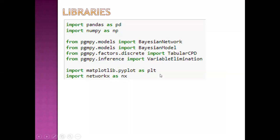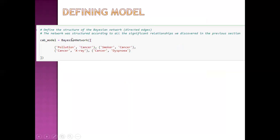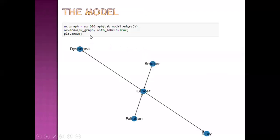These are the libraries for graphical representation. This is the structure of our Bayesian model — these are the directed edges. The direction is from pollution to cancer, from smoker to cancer, from cancer to x-ray, and from cancer to dyspnea. This is how we define the structure of our Bayesian network. This is the graph: we have the initial variables smoker and pollution which cause cancer, and cancer results in alterations in x-ray and presentation of symptoms such as dyspnea. This is the directed acyclic graph of our model.